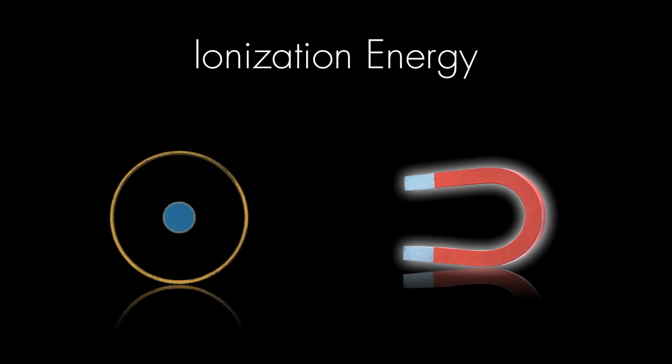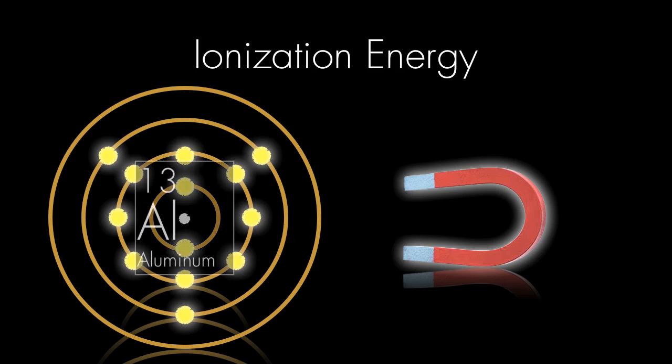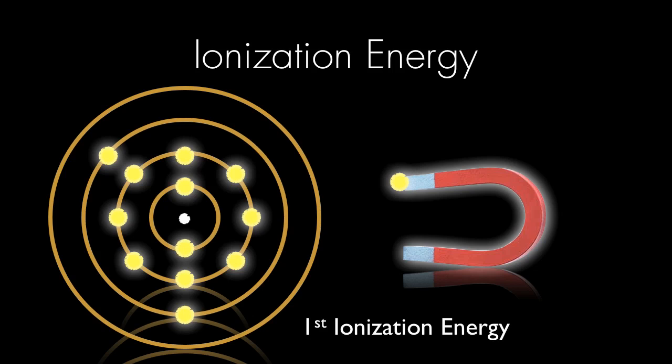Of course, some atoms have several electrons. For example, an aluminum atom has 13 electrons. The energy it takes to pull off one electron is called the first ionization energy. The energy for the second electron is called the second ionization energy, and so on and so forth.